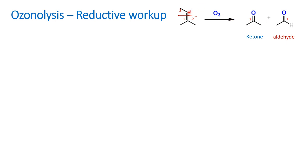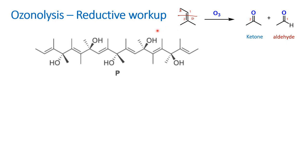So in the next alkene, there are two parts of R group — ketone and hydrogen group. This is complete summary information about ozonolysis.